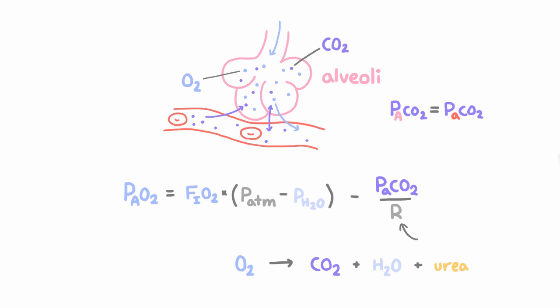And the result is that on average, for a Western diet, metabolizing one oxygen molecule produces 0.8 carbon dioxide molecules. And so that's what this R is. We call it the respiratory coefficient, and it's equal to 0.8 for the average Western diet.